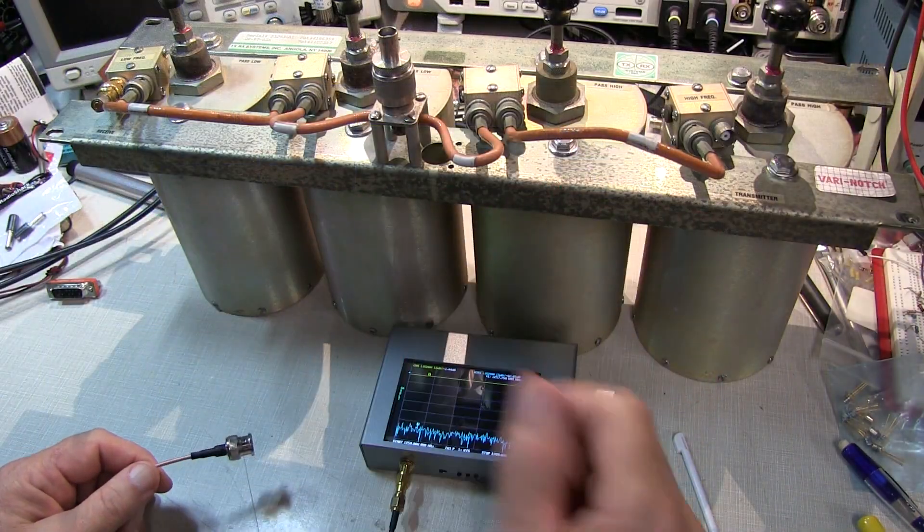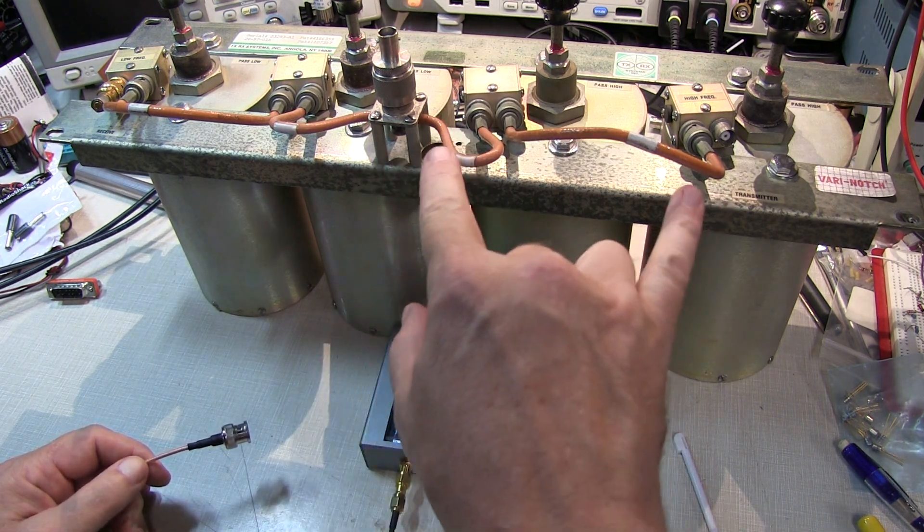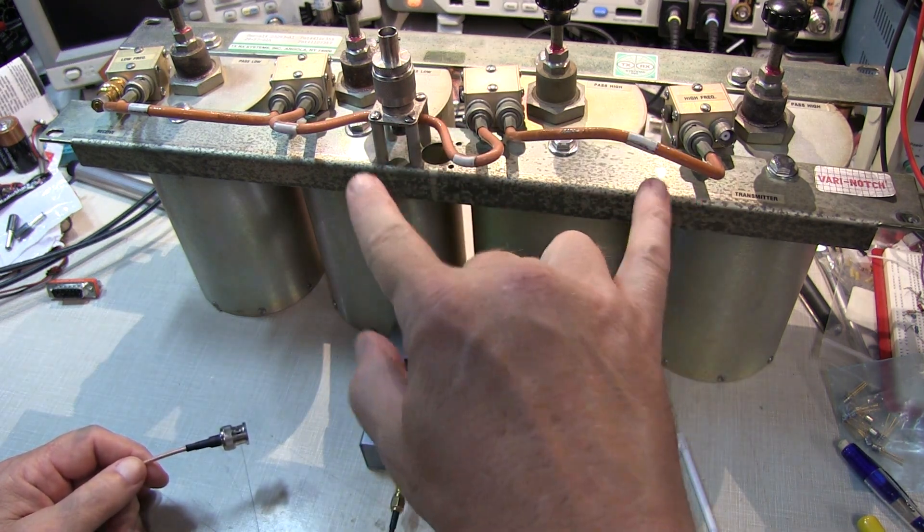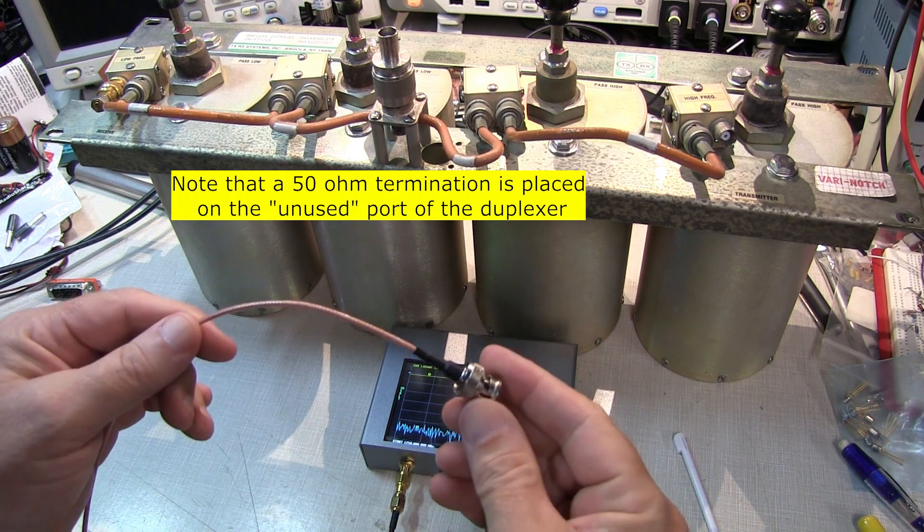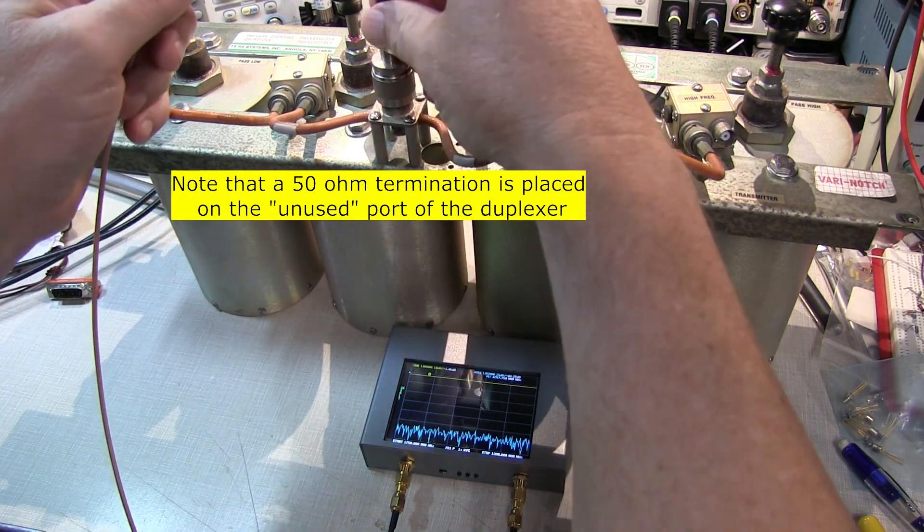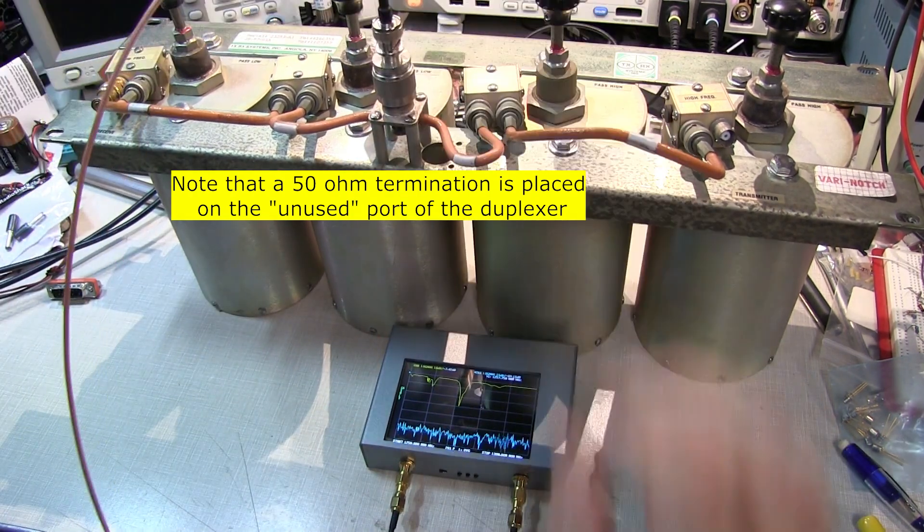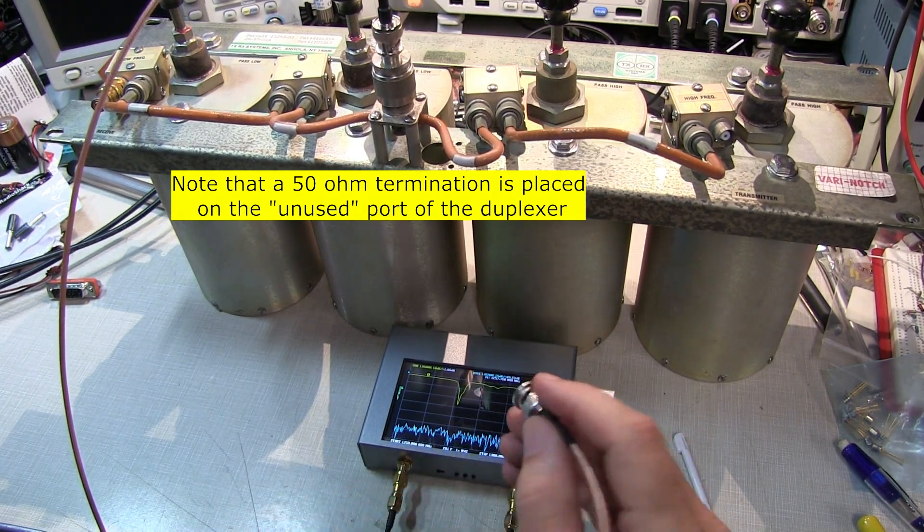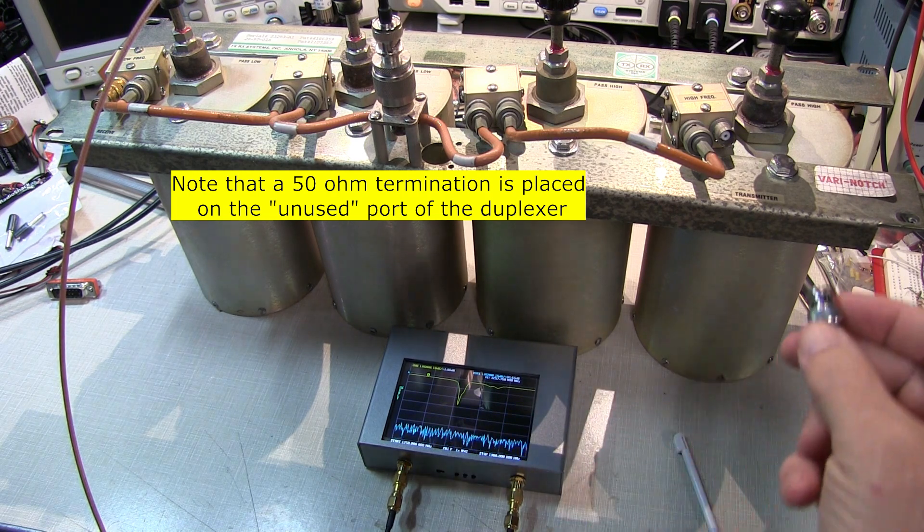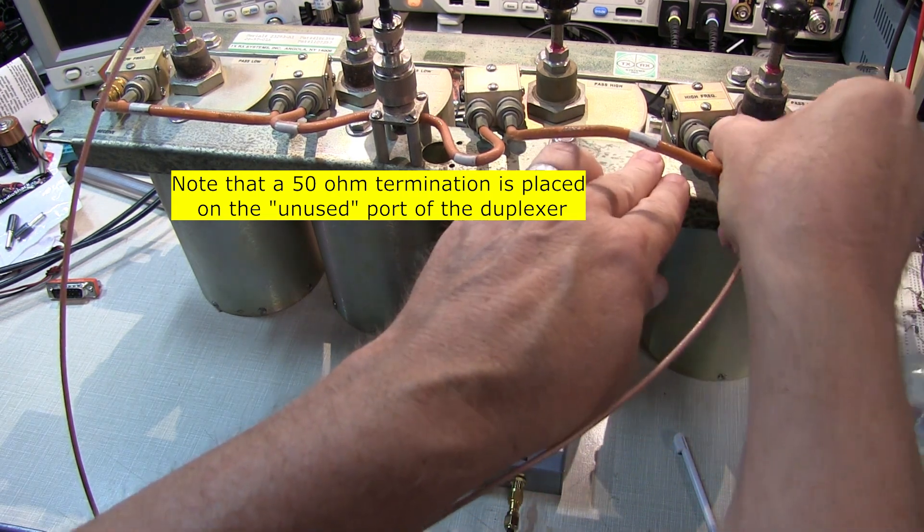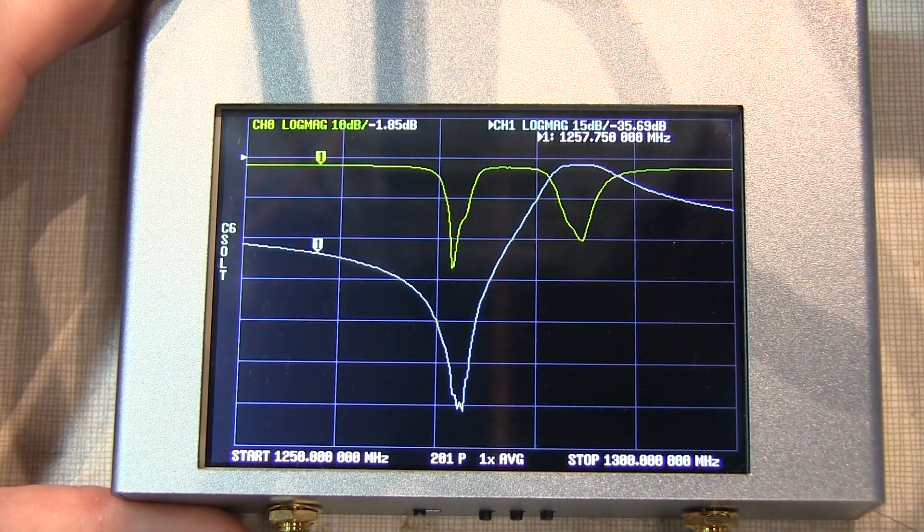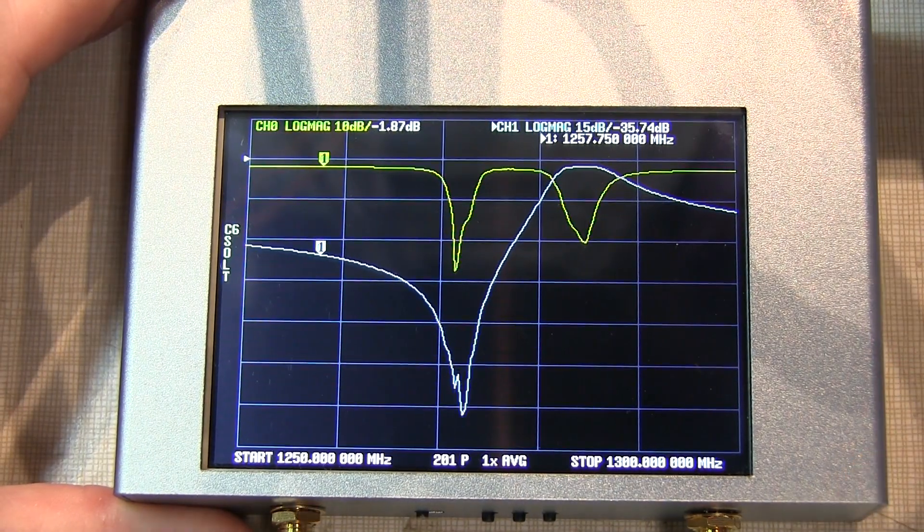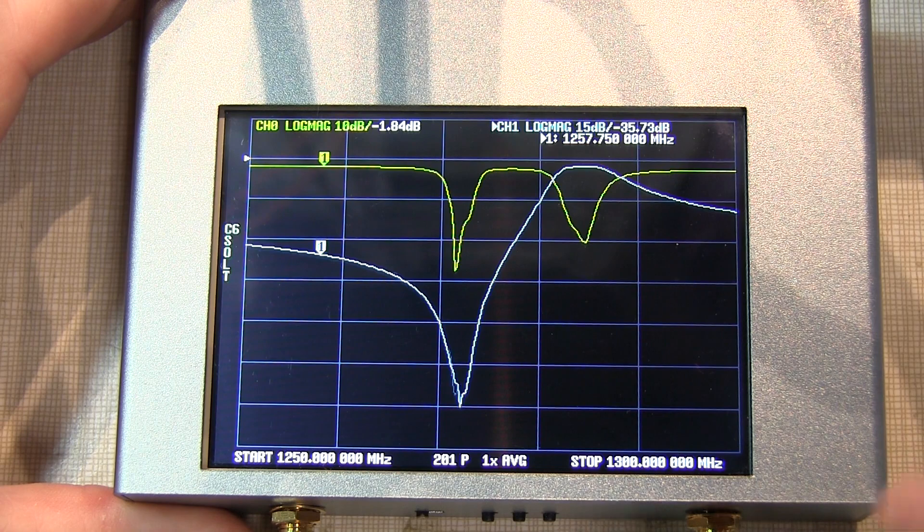The filter is passive bi-directional, so it doesn't matter which direction we hook up the VNA. I'm going to take the source port and connect it to the antenna port. I'll take the transmission port of the VNA and connect it to the high side, or transmit side.